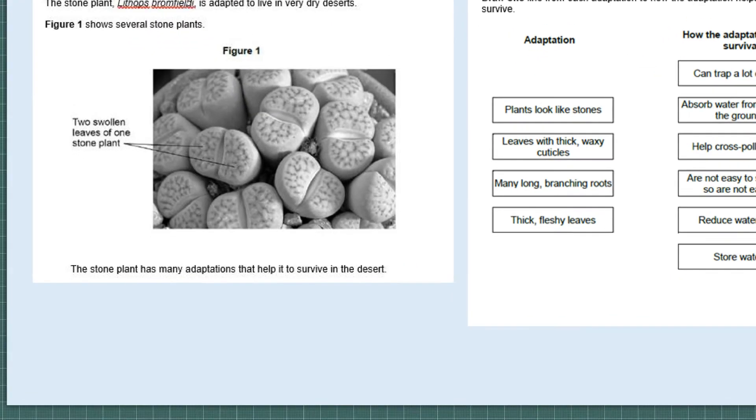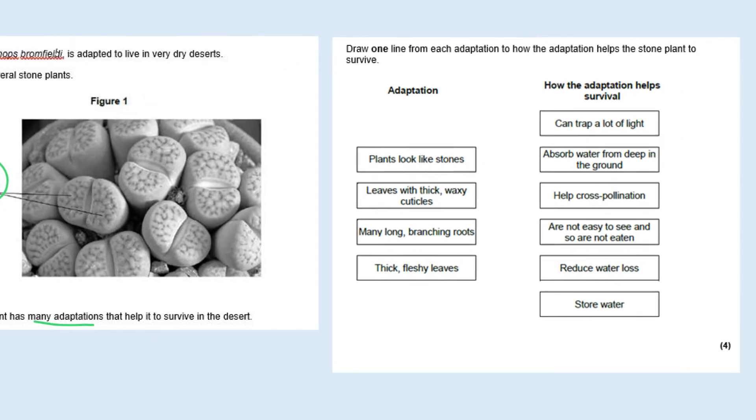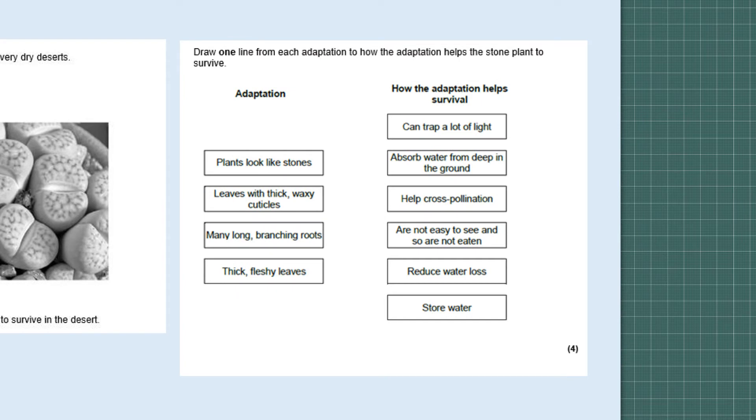Okay, here's the first type of question you might come up with. Here is again stone plant lithops and it tells you it's adapted to living in very dry deserts. It shows you they've got swollen leaves, and the reason they're swollen is because they're full of water. It tells you they have many adaptations and then they give you a list. It asks you to draw one line from each adaptation to how the adaptation helps survival. I'd like you to have a read of them and think which could be the correct answer. Please do pause at this point.